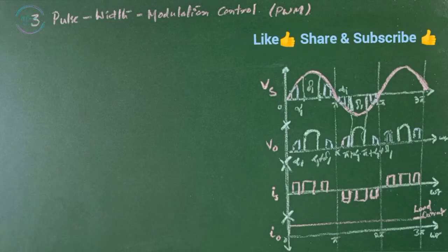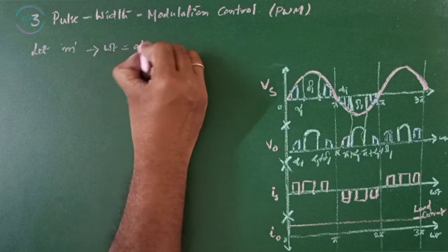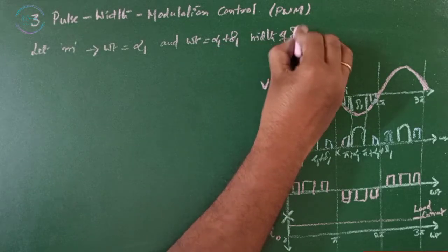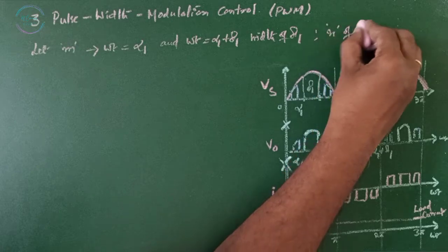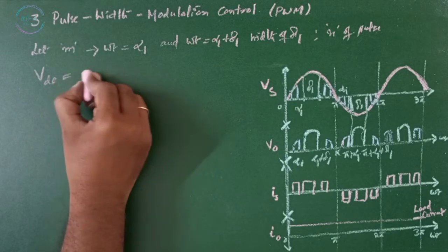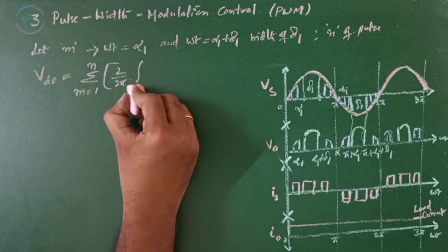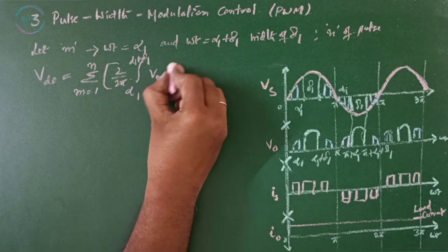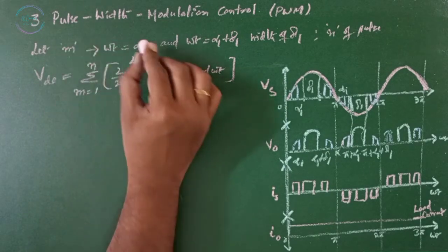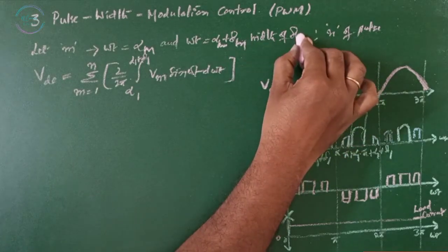We have two types of pulses modulation that is single pulse and multipulses. Let the pulse m starts at omega t equals to alpha m plus delta m. The width of delta m. And if we have n number of pulses, that is multipulses. If n equals to 1, 1 pulse will be there. Then the average output voltage Vdc will be delta 1, Vm sin omega t d omega t.